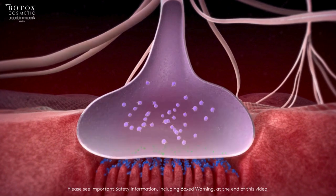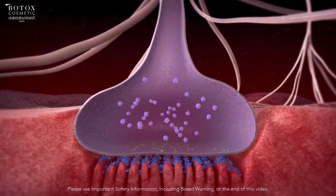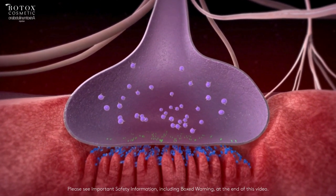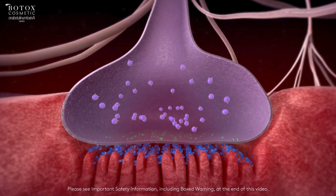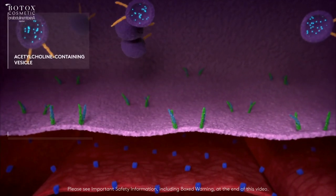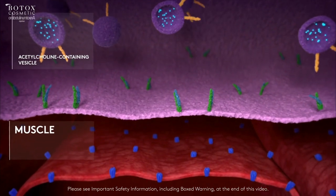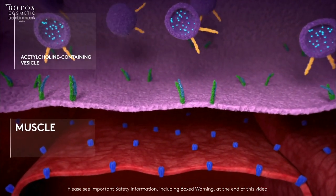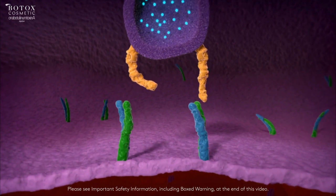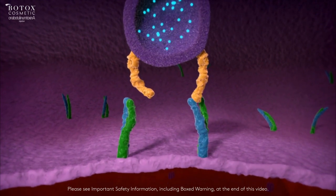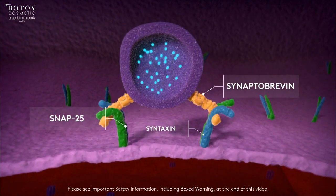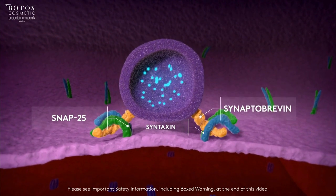The presynaptic neuromuscular motor nerve ending contains vesicles prepared to release the neurotransmitter acetylcholine. When neuronal stimulation occurs, the vesicle fuses with the nerve membrane. This process is facilitated by interaction between proteins on the vesicle and the cell surface, forming the snare complex.